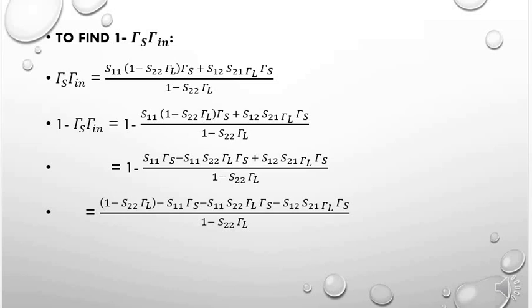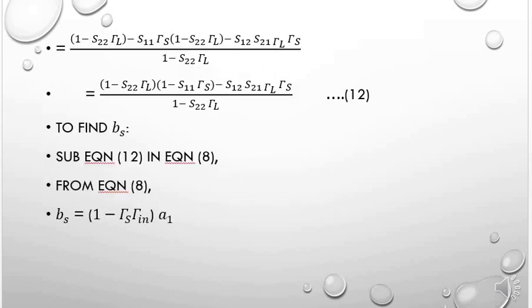Simplifying, with gamma_s common in the second term: [1 minus S22·gamma_L minus S11·gamma_s·(1 minus S22·gamma_L) minus S12·S21·gamma_L·gamma_s] divided by (1 minus S22·gamma_L). Factoring further, this gives (1 minus S22·gamma_L)·(1 minus S11·gamma_s) minus S12·S21·gamma_L·gamma_s, all divided by (1 minus S22·gamma_L).